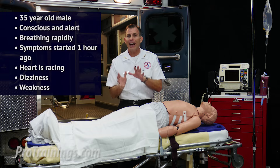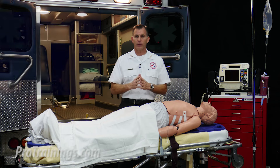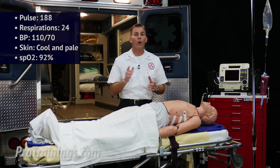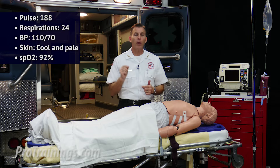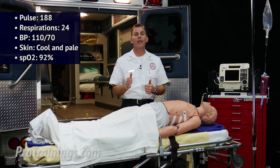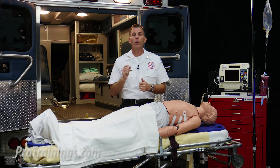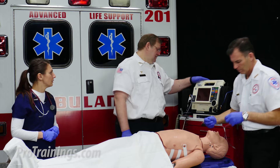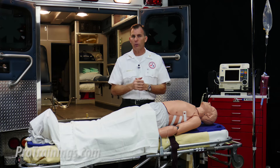Since the patient has no immediately life-threatening conditions, we direct a team member to get a good set of vitals. The vitals are as follows: pulse rate is 188, respirations are 24, blood pressure is 110 over 70, skin is cool and pale, and the O2 sat is 92%. Based on the O2 sat, we need to start oxygen, and we're going to titrate to four liters via nasal cannula. The goal is to titrate oxygen to keep an O2 sat of 94% or better.